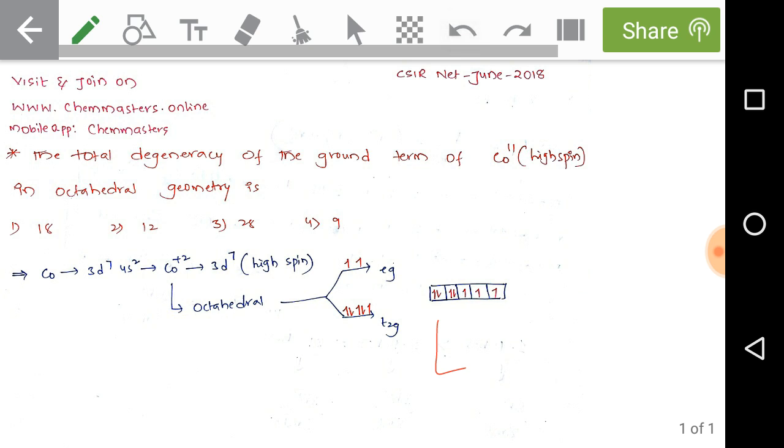Cobalt(II) high spin octahedral complex has L value three. Now we need to calculate S value. As we calculated, the cobalt(II) octahedral high spin complex is having three unpaired electrons. So S equals n by 2, where n is unpaired electrons. There are three unpaired electrons, so that's 3 by 2.